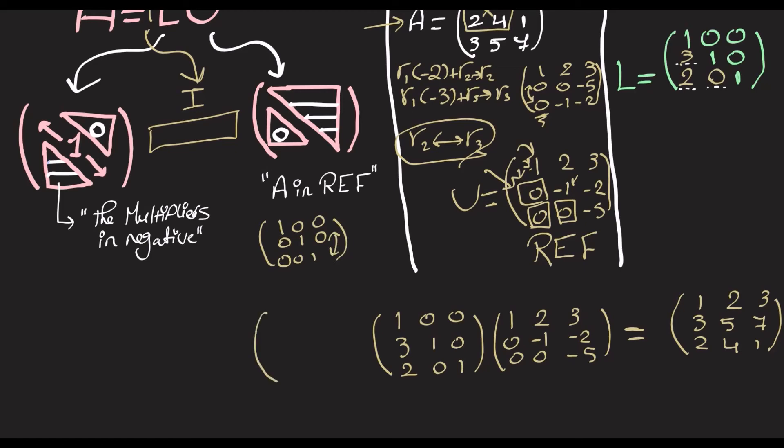So, P is 1, 0, 0, 0, 0, 1, and 0, 1, 0. So, now, this is P, and this is L, and this is U.